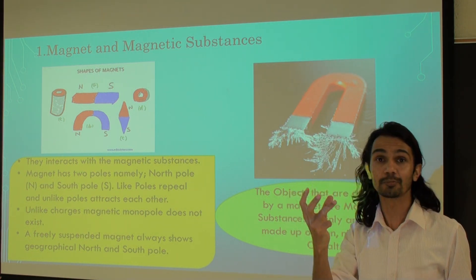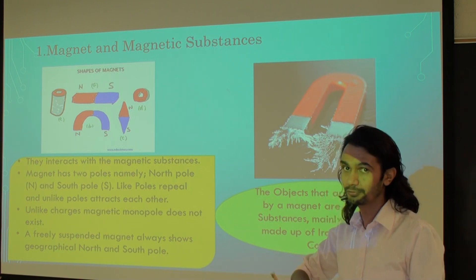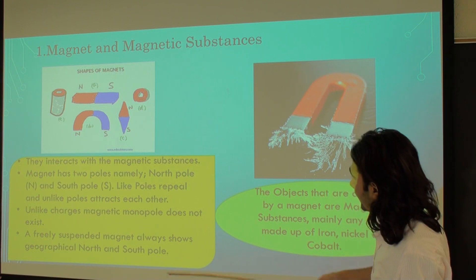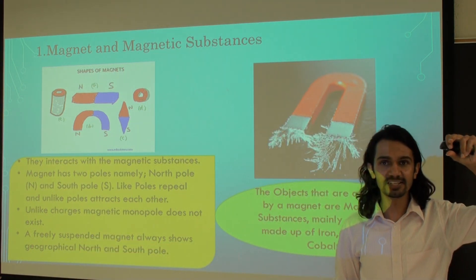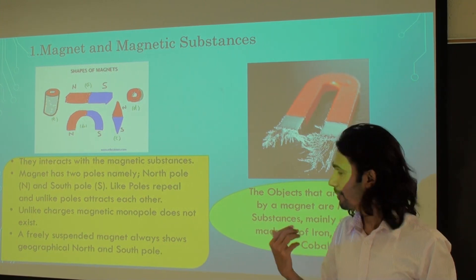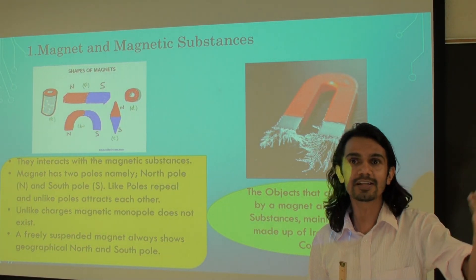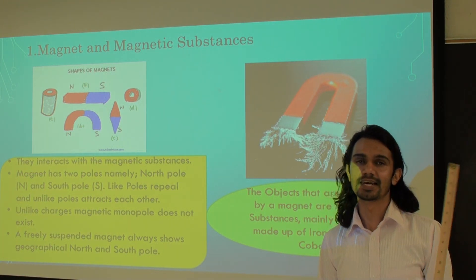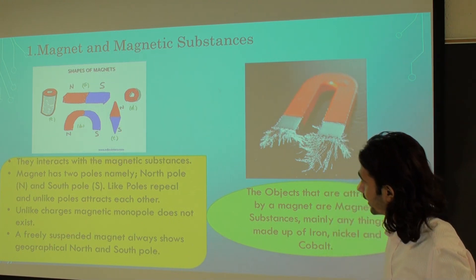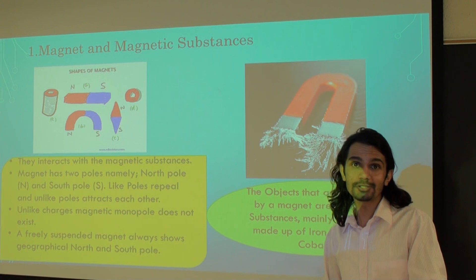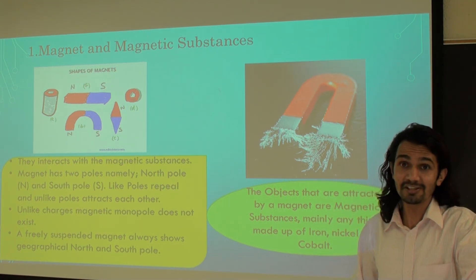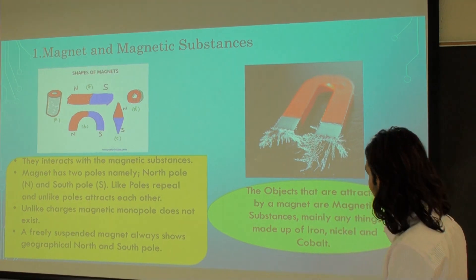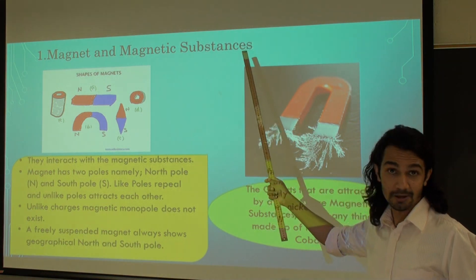In the previous lab we studied about charges — we can have a single negative charge or single positive charge. But in the case of magnets, unlike charges, a magnetic monopole does not exist. This means we cannot have a single pole. If we break a magnet, we will again have two north poles and two south poles. If we suspend a magnet freely, it always points toward the geographical north and south, because we can consider the Earth itself as a magnet — a terrestrial magnet — whose north pole points toward the south and south pole toward the north.